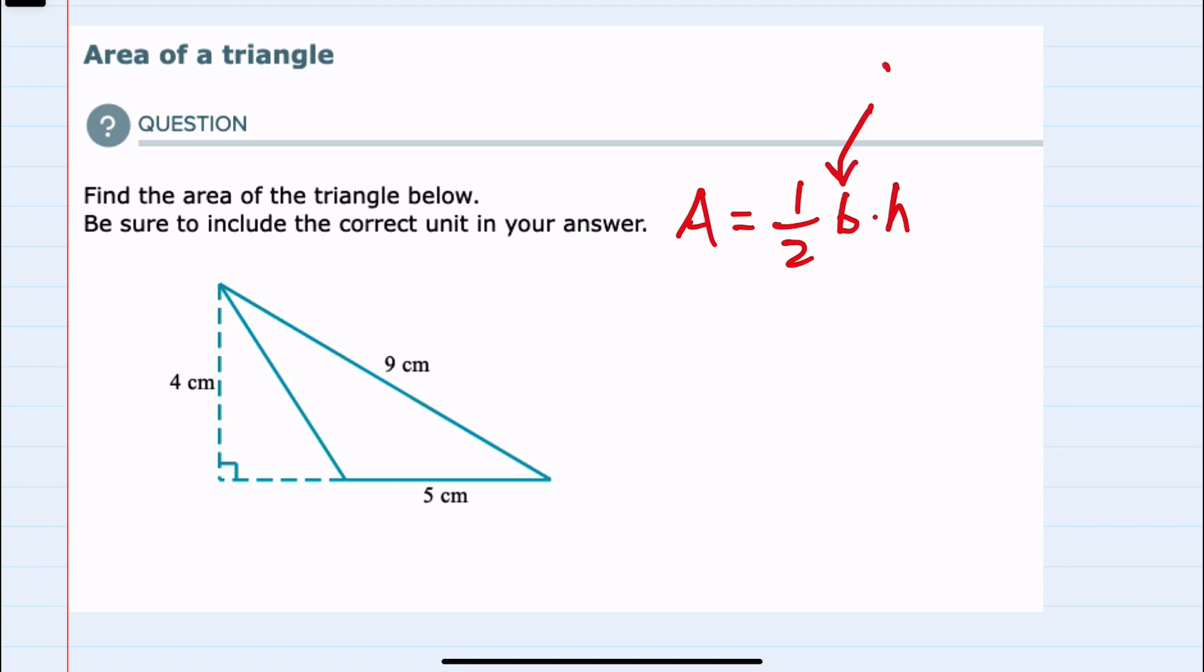So we need to plug in two values: the base and the height. Looking at this example, we can substitute area equals one half. The base is the bottom of the triangle, so here five centimeters.